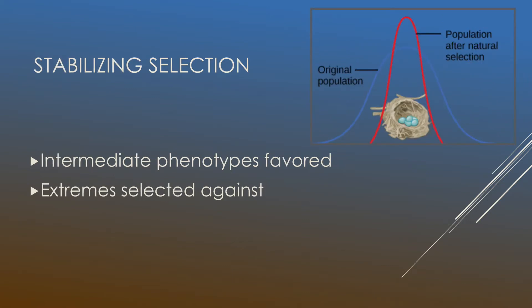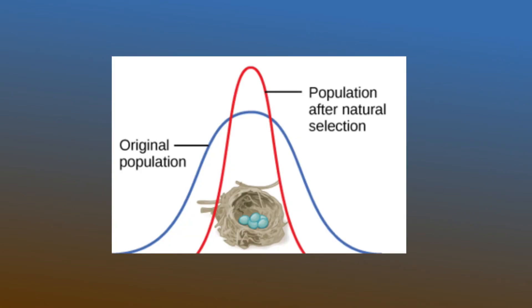Lastly, we have stabilizing selection. Stabilizing selection results in the intermediate phenotypes being favored. So neither of the phenotypic extremes are selected and only the intermediate is. And so it produces a graph that looks like this.